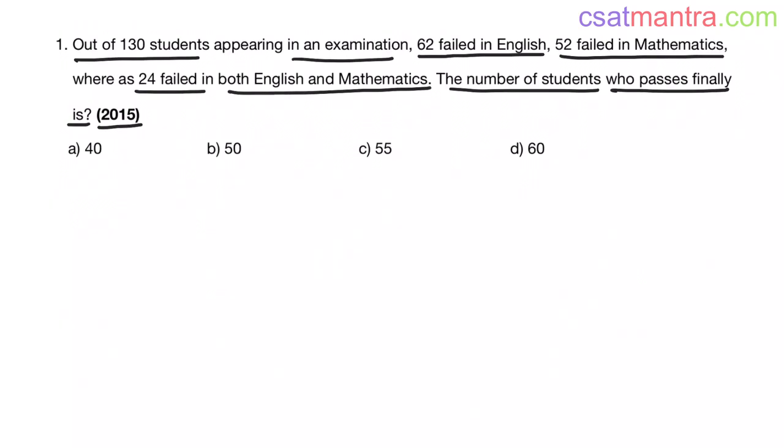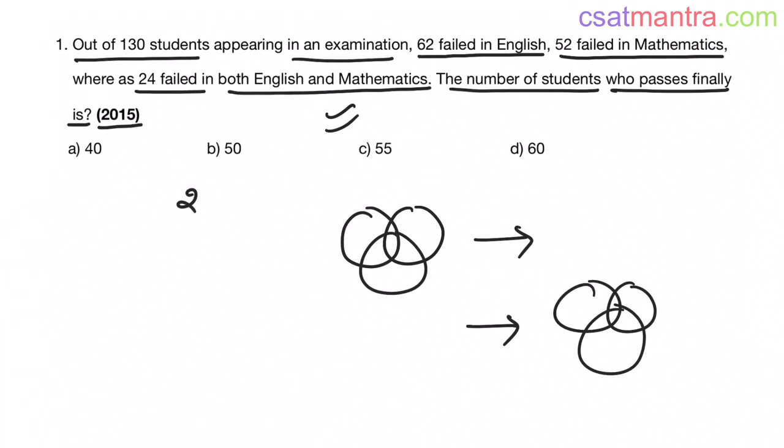This is a question from set theory. There are two kinds of questions asked from set theory. One, they will give you a Venn diagram and ask a question based on that. And second type will be like this question. They will just give the description. In this case, you have to draw the Venn diagram and find the answer.